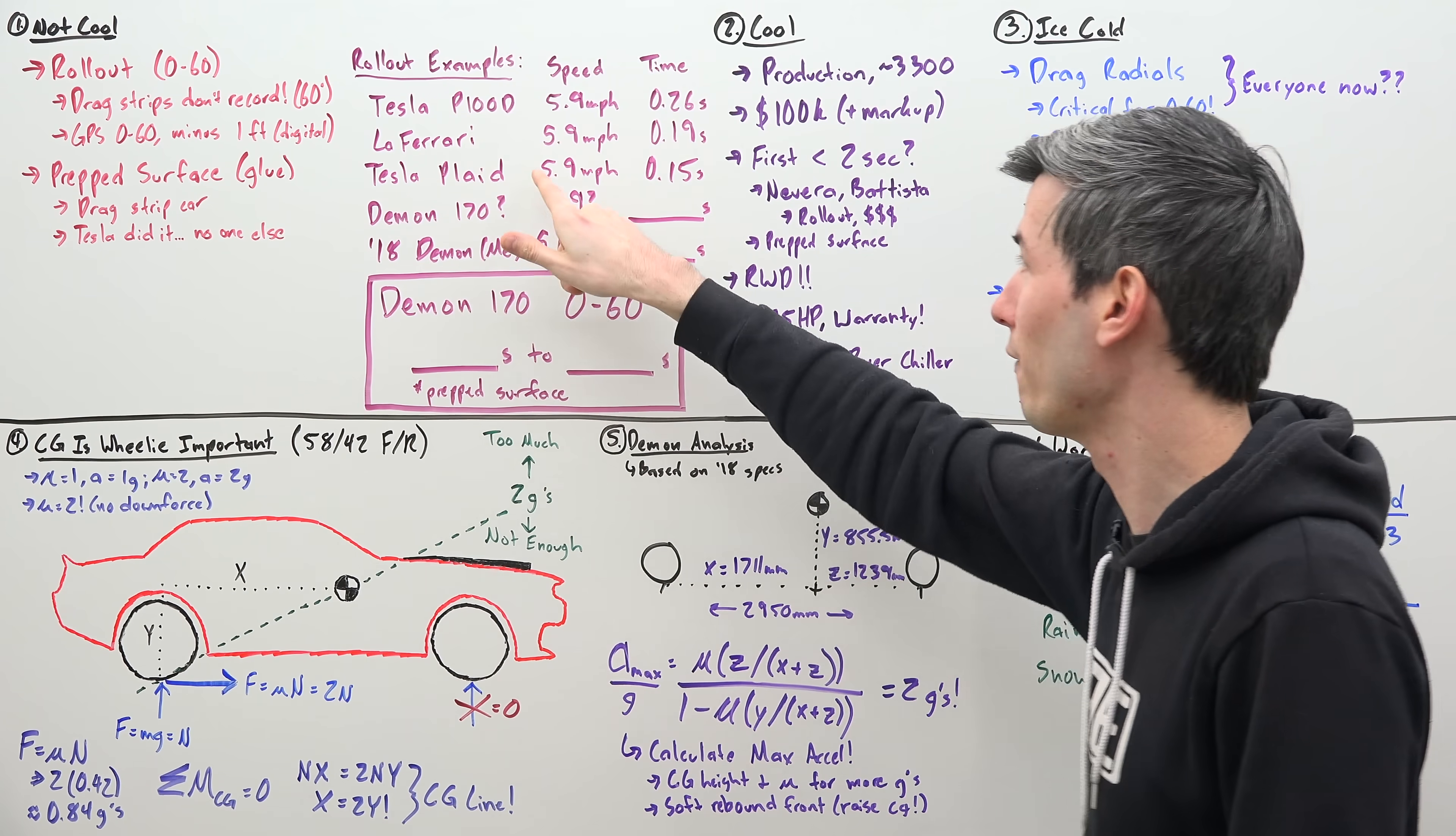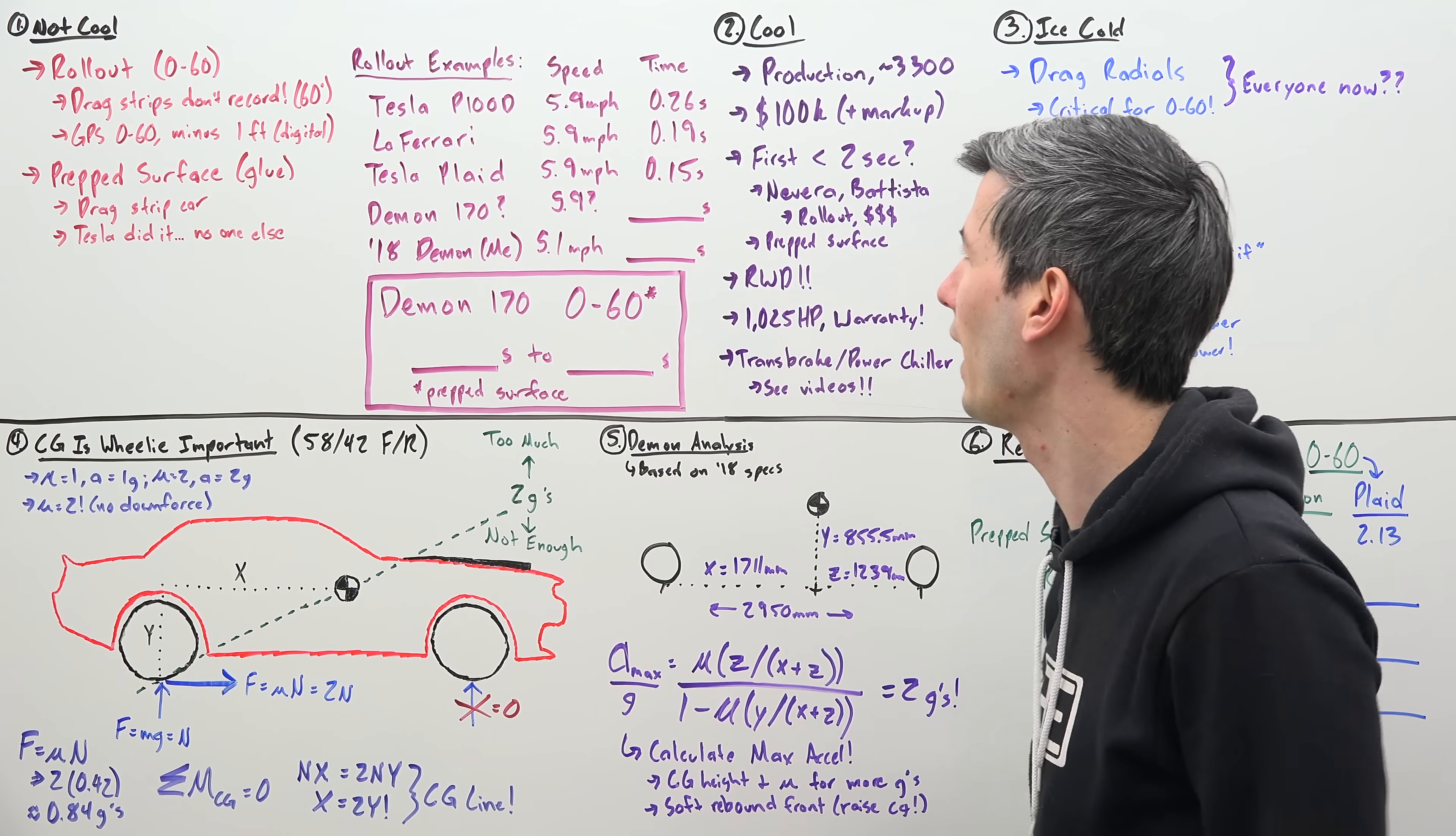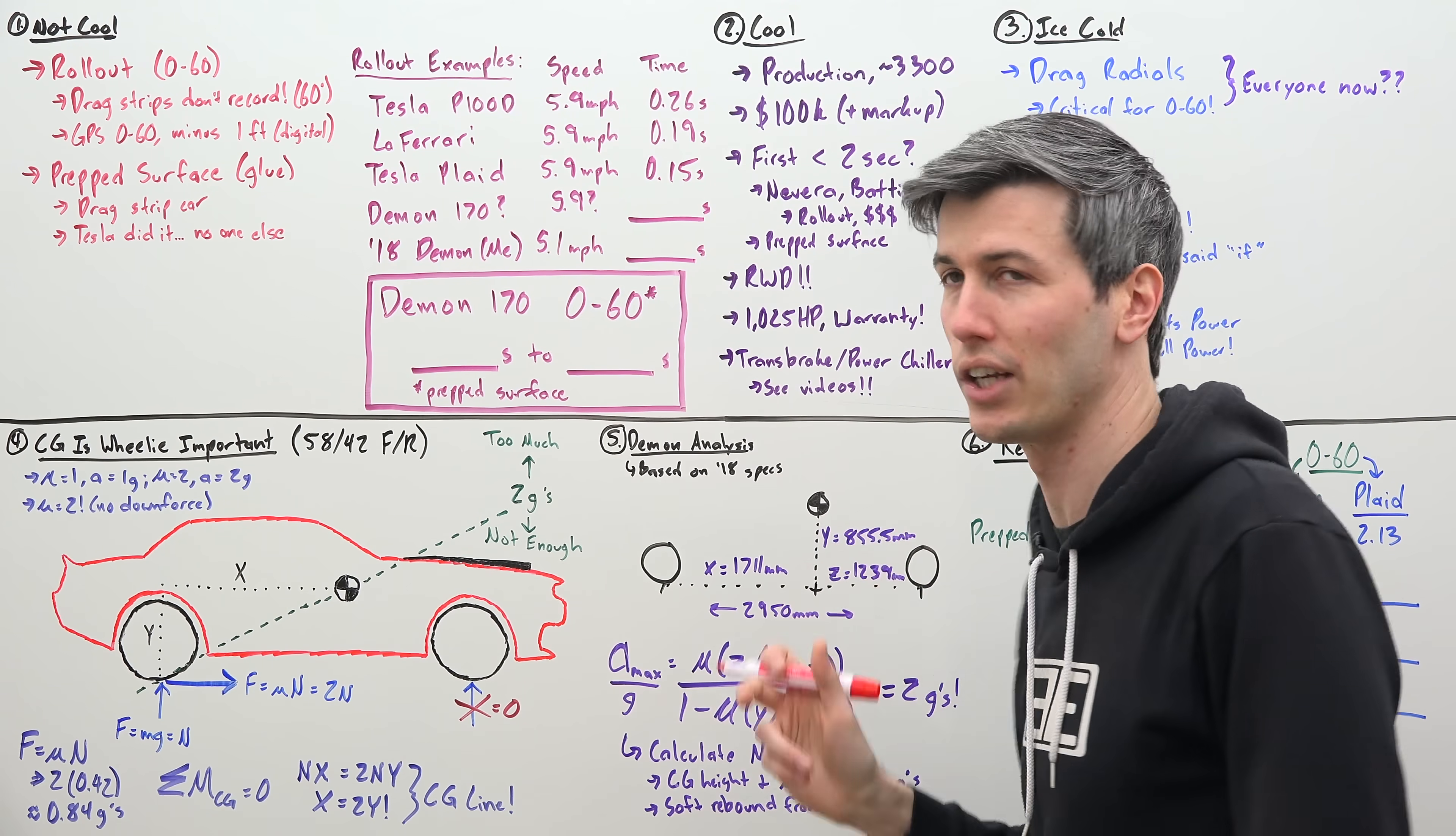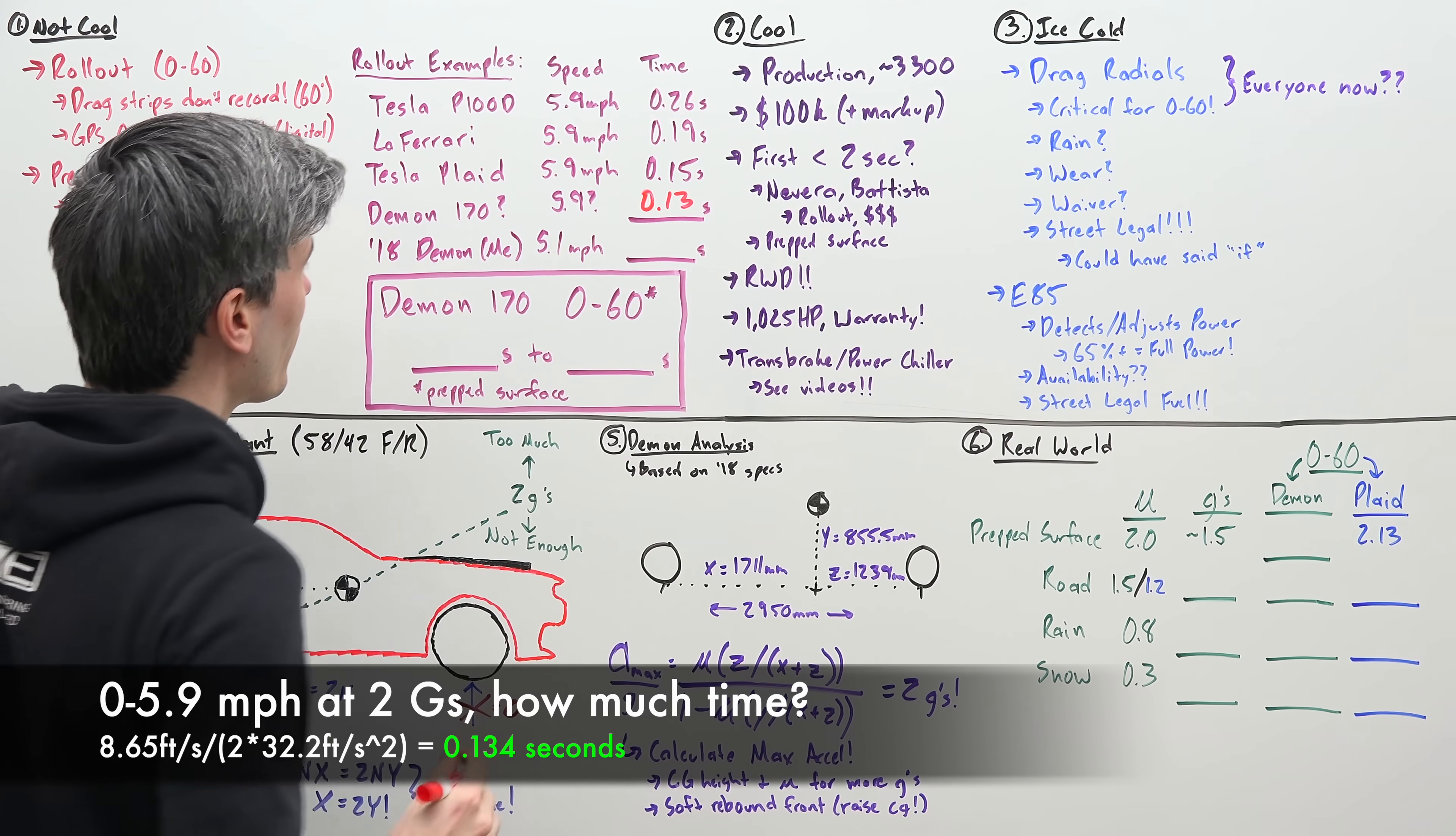So Tesla Plaid, 5.9 miles per hour. It's kind of cool to see that there's this speed that basically with one foot of acceleration on a tire, you reach this maximum speed of about 5.9 miles per hour, and the Tesla Plaid did that in 0.15 seconds. So that was the rollout time that was deleted from its 0 to 60. So if we were to look at the Tesla Plaid, this is accelerating on average at about 1.8 Gs.